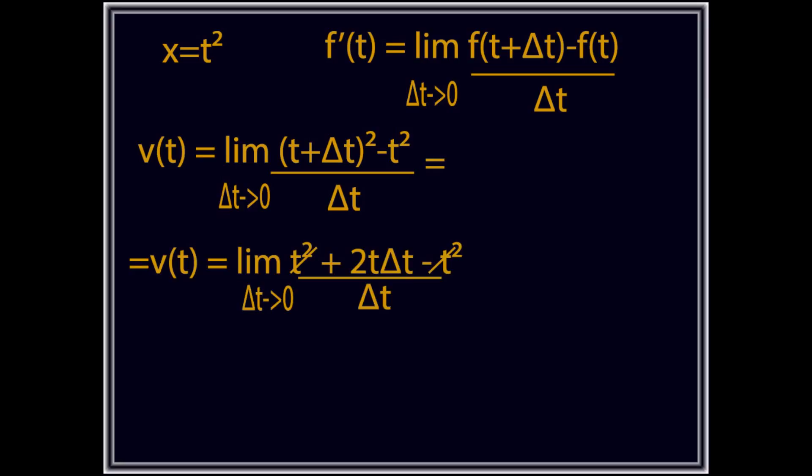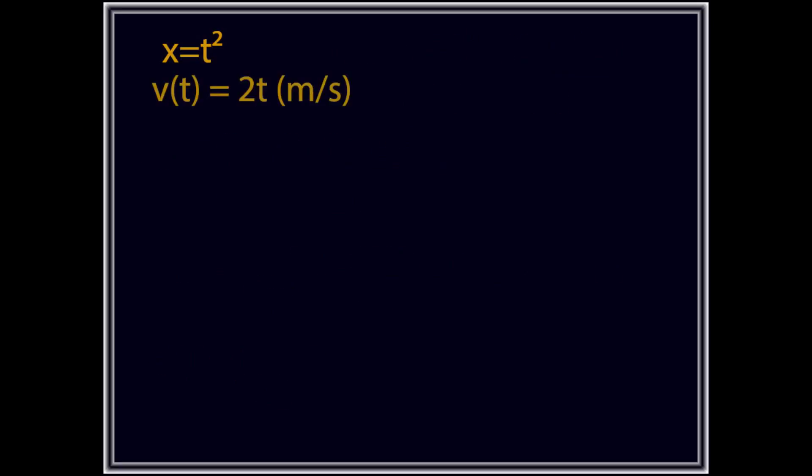Substituindo x igual a t ao quadrado na equação da velocidade instantânea v de t, encontramos v em função de t é igual ao limite de delta t tendendo a zero, 2t. Assim, a equação da velocidade instantânea v em função de t é igual a 2t metros por segundo.